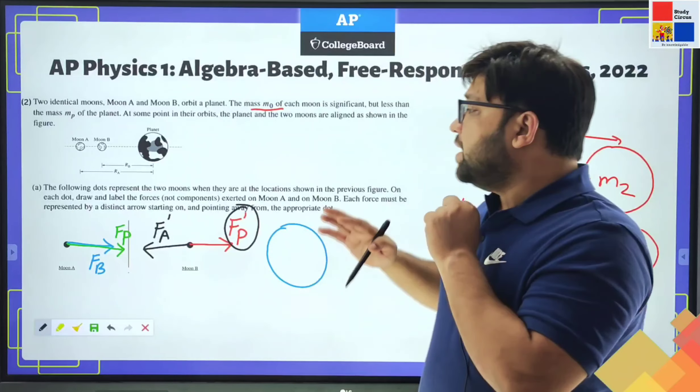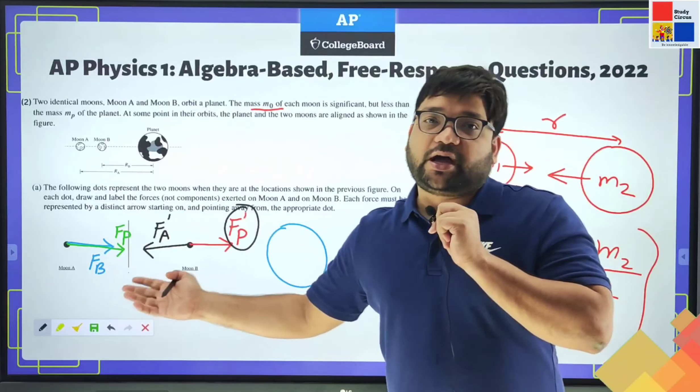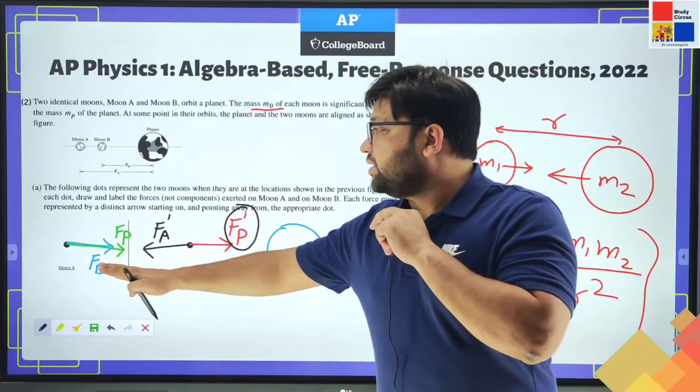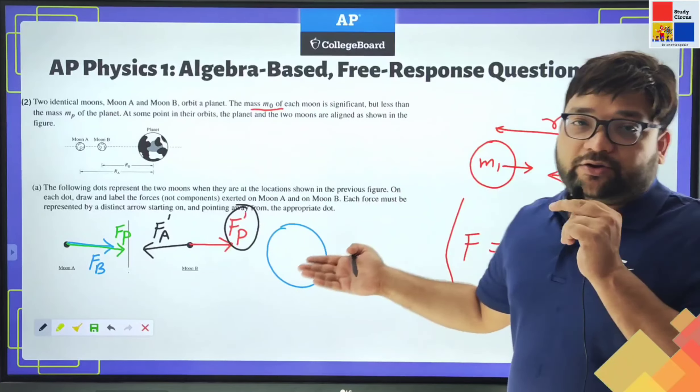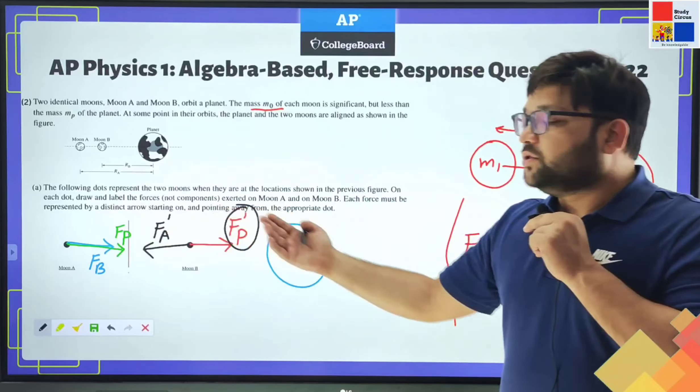In the following parts we will be seeing how much exactly the forces are. But part A is just asking you to make an arrow and represent the forces acting on the two moons.